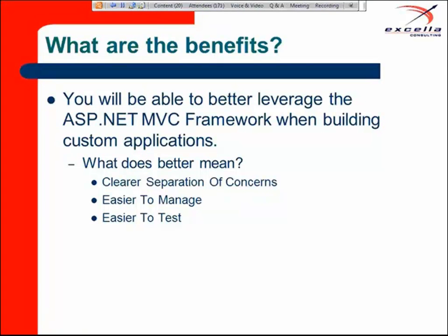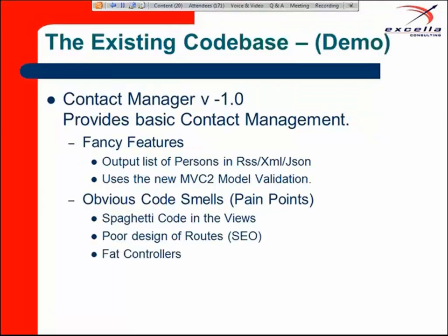The application we're going to be looking at is a working contact manager — a very lazy one, version minus one, as I call it since it's a demo application. It allows for basic contact management: you can track persons and associated emails. It has some fancy but basic features — you can explore the list of persons in RSS, XML, or JSON format, and it uses some of the new MVC 2 model validation features.